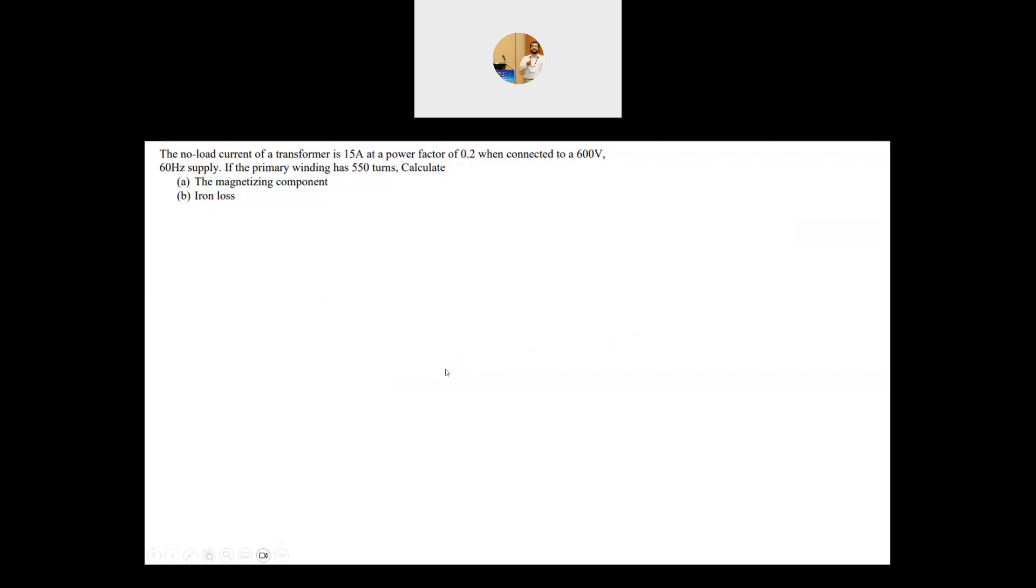The question says the no-load current of a transformer is 15 amp at a power factor of 0.2 when connected to a 600 volt 60 hertz supply. If the primary winding has 550 turns, calculate the magnetizing component and the iron loss. The key to solve this question is to use the right model of the transformer.